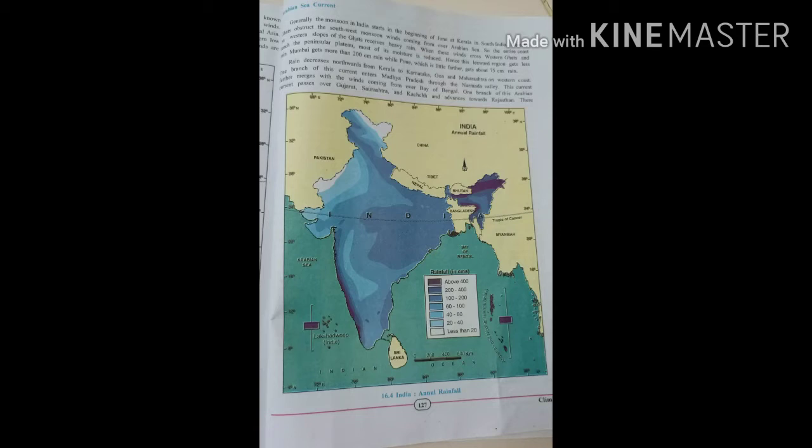One branch of this current enters Madhya Pradesh through the Narmada valley. These currents further merge with the winds coming from over the Bay of Bengal. One branch of this Arabian current passes over Gujarat, Saurashtra, and Kutch and advances toward Rajasthan. Whenever the Arabian Sea current is nearby the sea area, they give heavy rainfall.